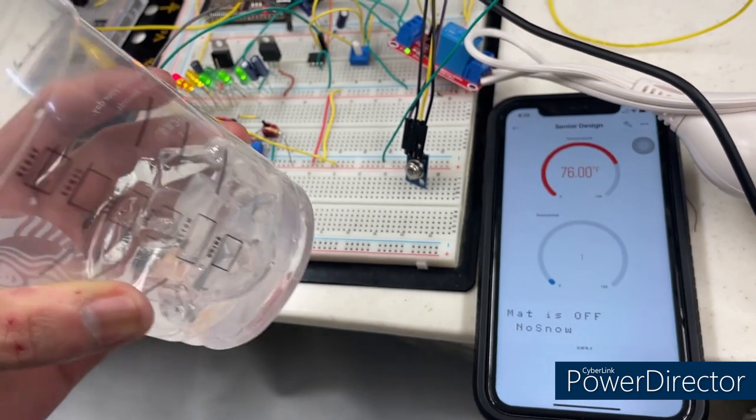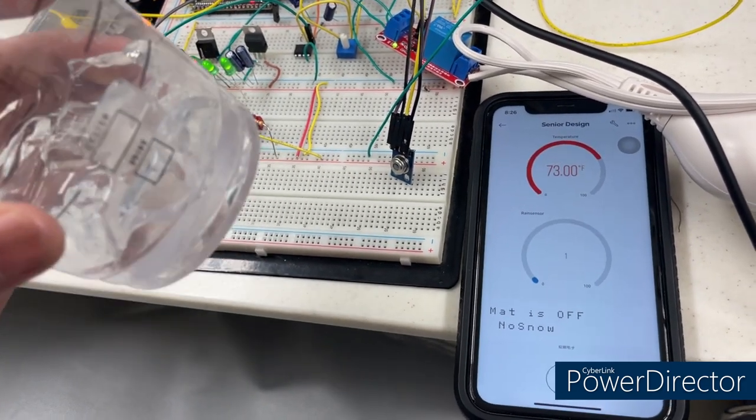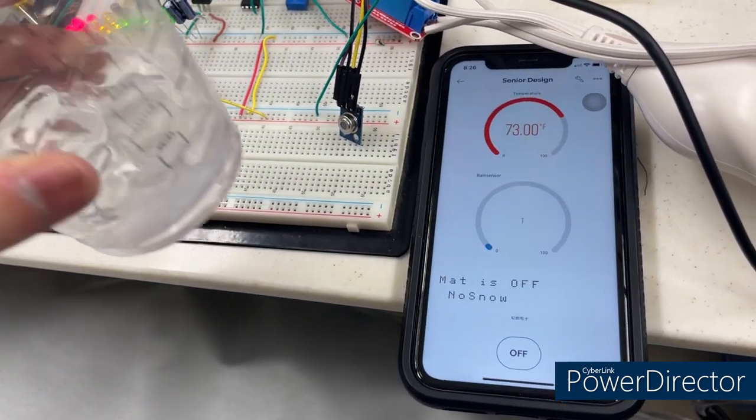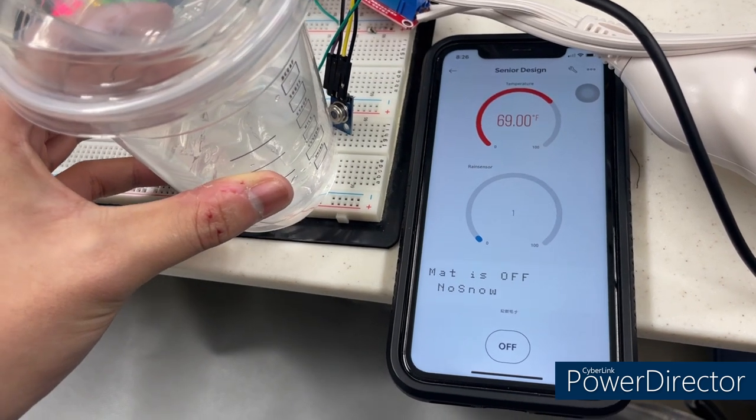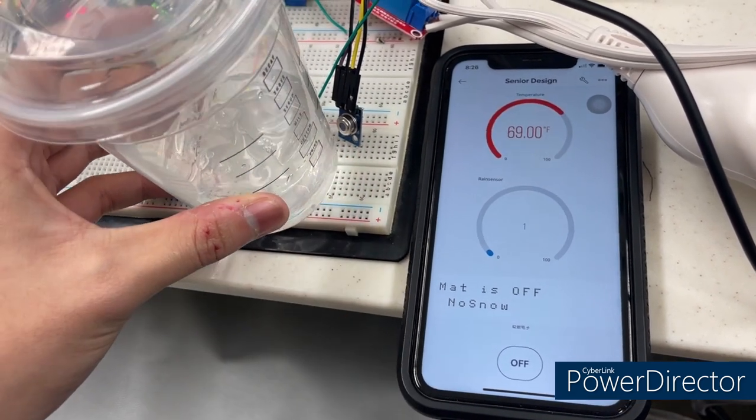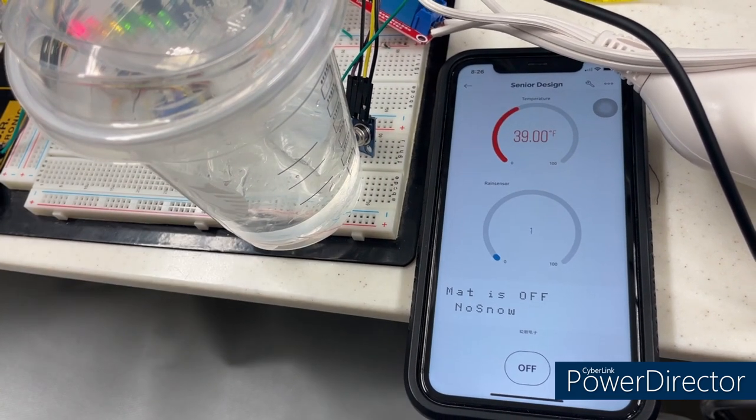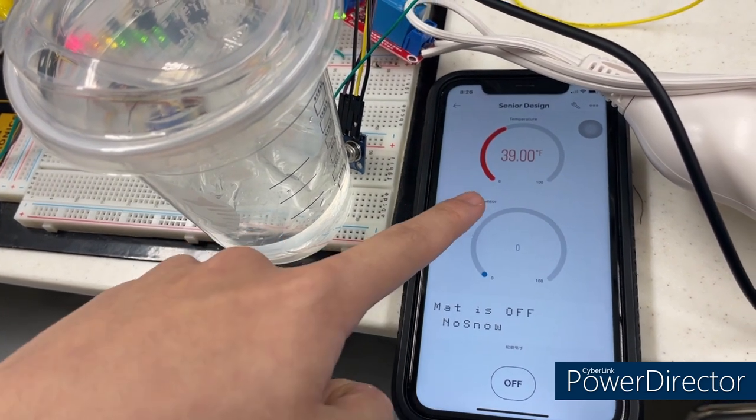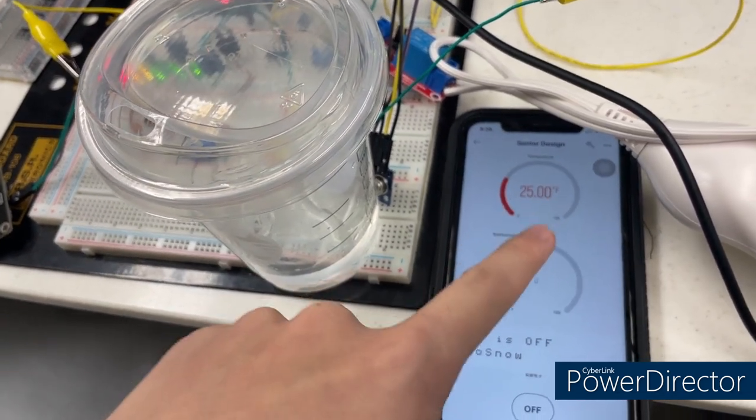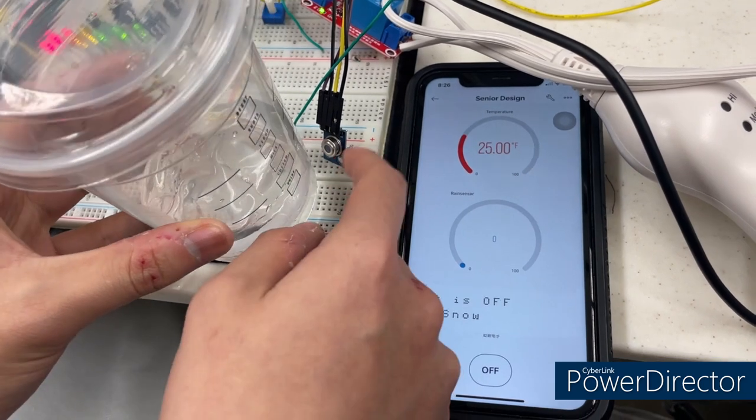When I bring it close to the temperature sensor, you can see the temperature drops really fast from 77 Fahrenheit to 25 because it's stuck together. When I take it away, the temperature goes back to room temperature.